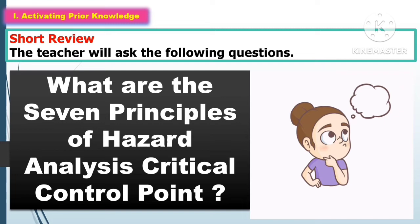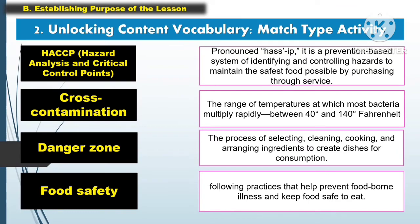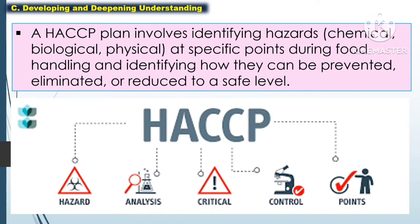In activating the prior knowledge for the short review, the teacher will ask the following questions. The Health Safety Management System is a group of procedures and practices intended to prevent food-borne illness. It does this by actively controlling the risks and hazards throughout the flow of food. A HACCP plan involves